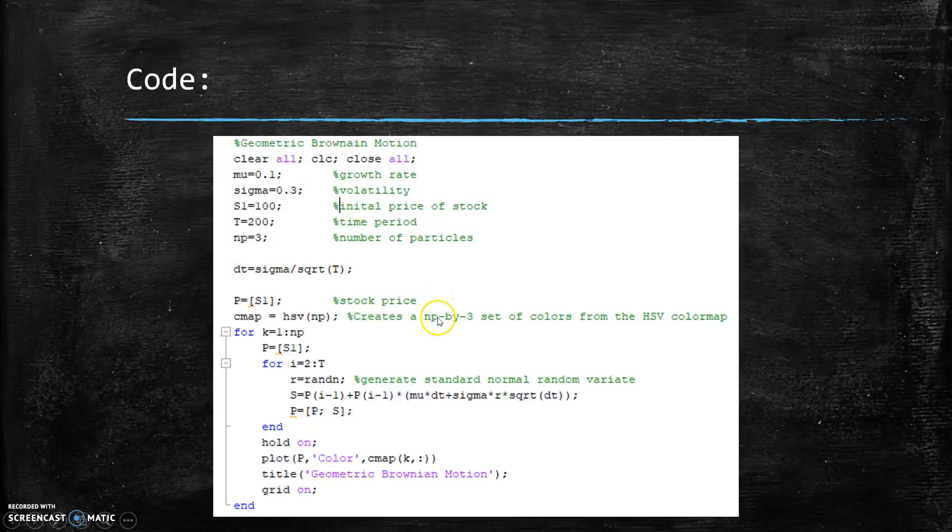And so coming down here, we're setting up our matrix again. And this is creating our 3x3 set of colors for our color map when we plot it. And we have another for loop for the three particles going through. And then here's our randomly generated standard normal random variates.